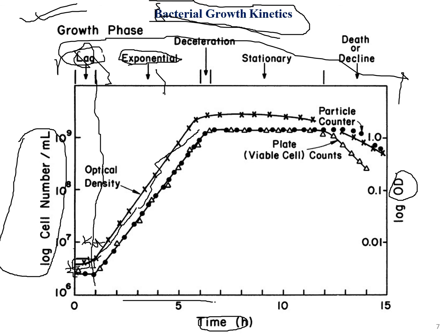Bacteria cannot multiply indefinitely. Eventually the nutrients get exhausted — decreasing with time while cell number increases. A deceleration phase follows: the bacterium still multiplies but not at the same rate as the exponential phase. The multiplication rate decreases drastically, while the death rate begins to rise slightly and growth rate falls significantly.